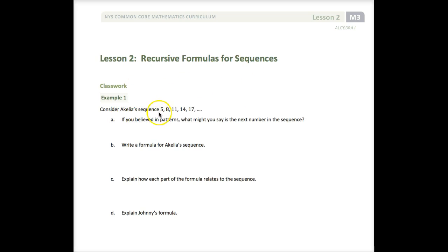Consider Achilles Sequence 5, 8, 11, 14, 17. If you believed in patterns, what might you say is the next number in the sequence? Hopefully you see that we're adding 3 each time and that your good guess, your best guess, was 20.